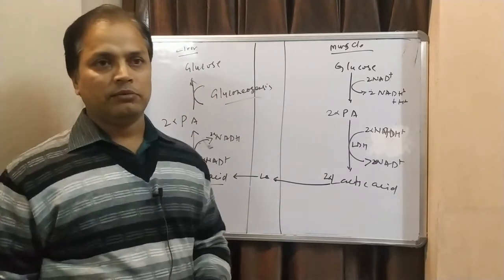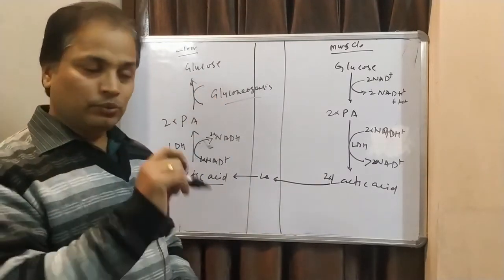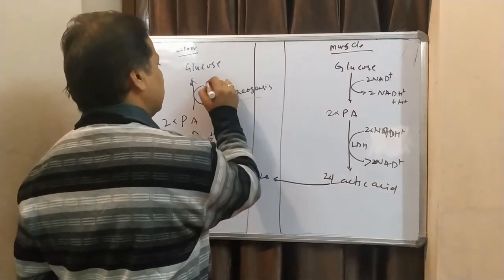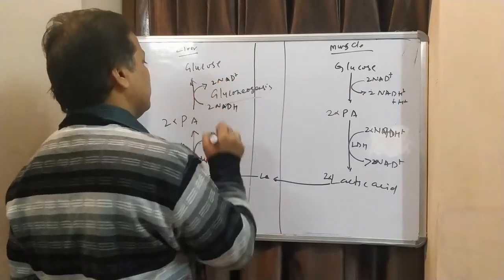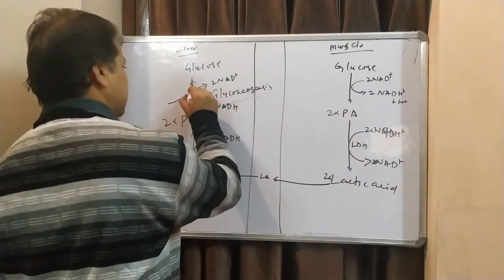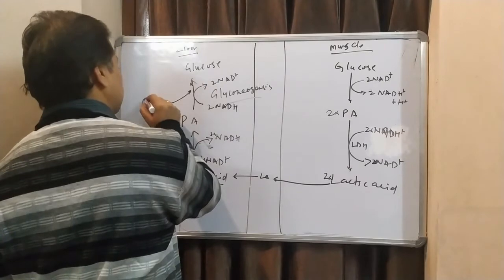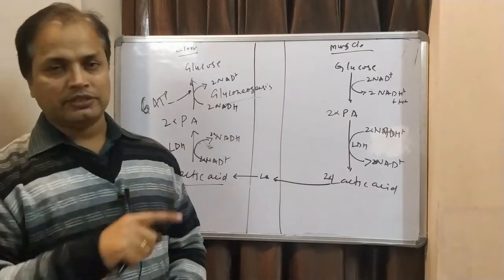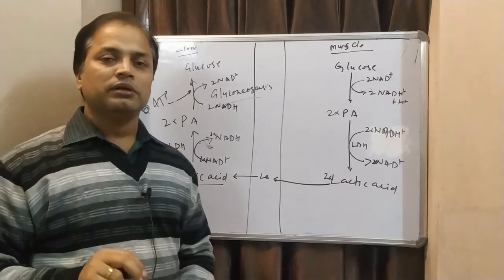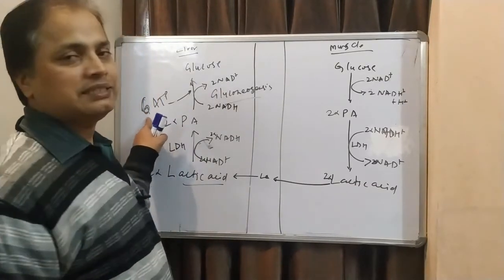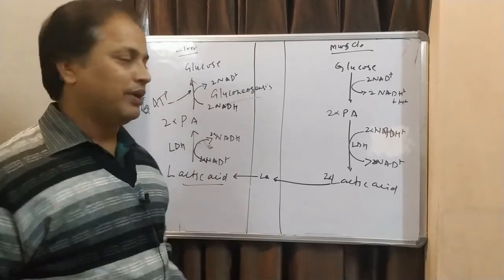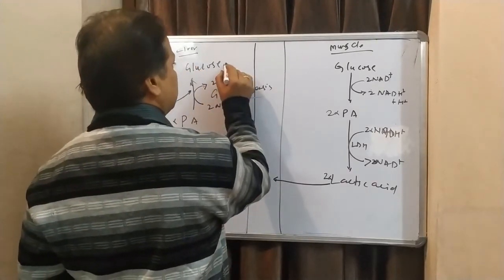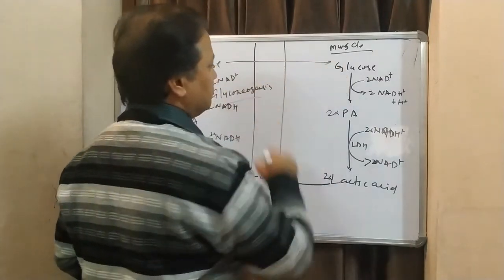Pyruvic acid converted into glucose by the involvement of 2 NADH. It uses 2 NADH, gives you 2 NAD+. Plus, this process requires 6 ATP. Just now we have seen 4 ATP or GTP. This is 6 ATP or ATP equivalent. Once this glucose will be produced, this glucose will be transferred into muscle through blood.